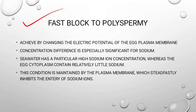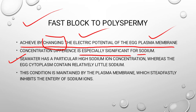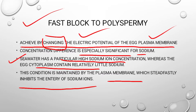First, the fast block to polyspermy is achieved by changing the electrical potential of the egg plasma membrane. The outer membrane of the egg — called the plasma membrane — when we change its electrical potential, that condition is named the fast block to polyspermy. The concentration difference is especially significant for sodium ion concentration. In sea water, sodium ion concentration is higher, while the cytoplasm has little sodium concentration. This condition is maintained by the plasma membrane, which steadily inhibits the entry of sodium ions.